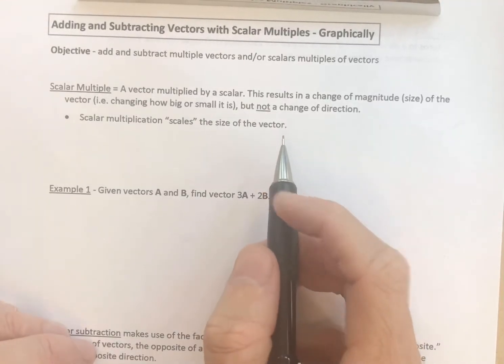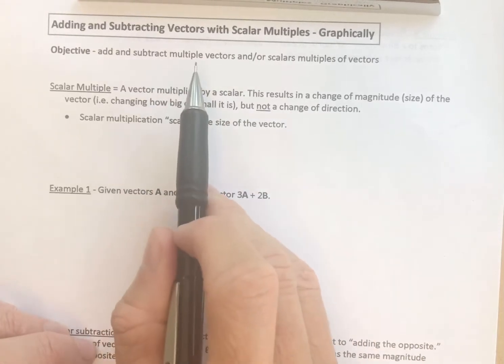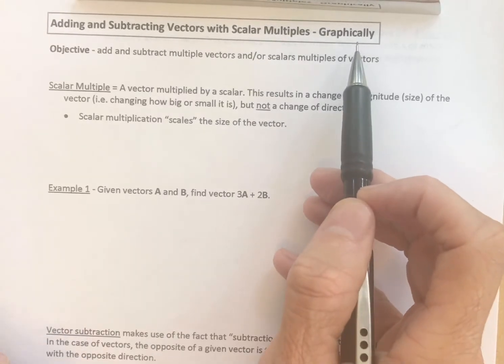Continuing our initial look at vectors, we're now going to take a look at adding and subtracting vectors with scalar multiples, and we're going to do this graphically.